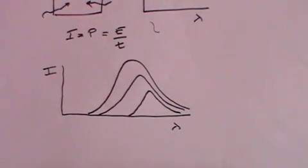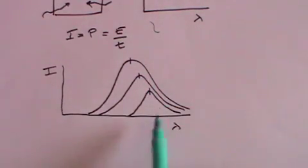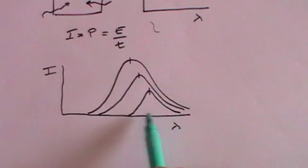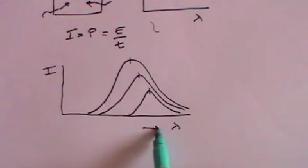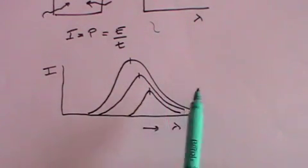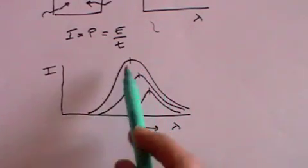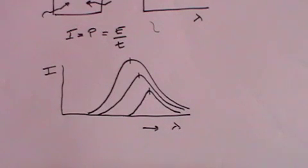The things to notice about this graph is that as the temperature goes down the peak at wavelength goes to the right. In other words the wavelength increases as the temperature decreases. And secondly you'll notice that in all cases the graph goes up and down on either side of the maximum.